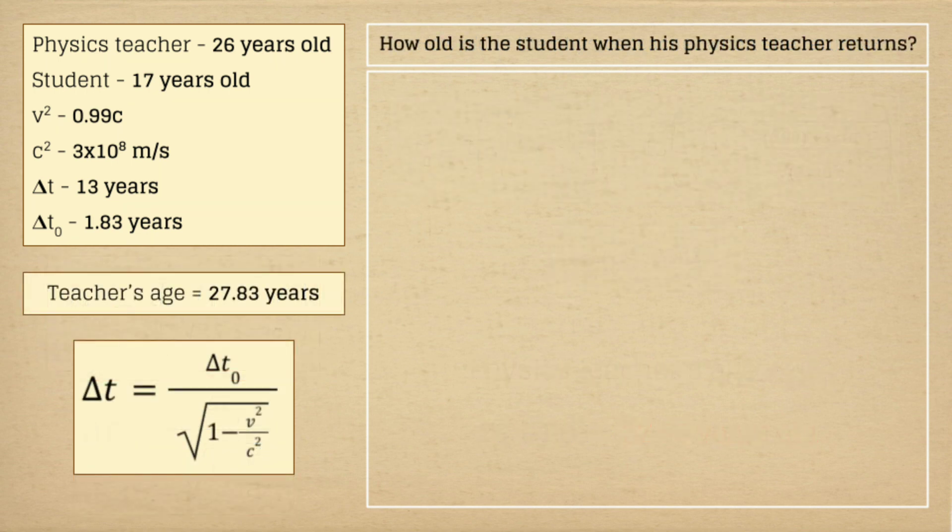Moving to the second part of our first question, let us now find out the age of the student when his physics teacher returns. For this one, we would use the equation of the change in measured time, since we're talking about the observer on earth.